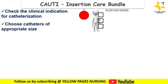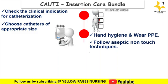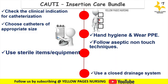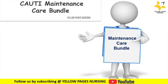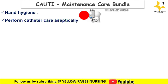The insertion care bundle includes: check the clinical indication for catheterization, choose catheters of appropriate size, perform proper hand hygiene and wear personal protective equipment appropriately, follow aseptic non-touch techniques, use sterile items and equipment, and use a closed drainage system.